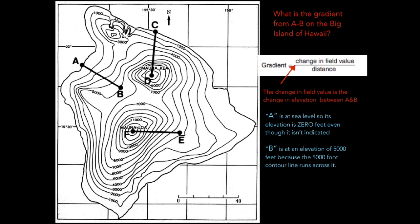B is indicated as 5,000 feet. If you trace the line from B to the left, you can run into that 5,000. So our change in elevation is obviously 5,000 feet.